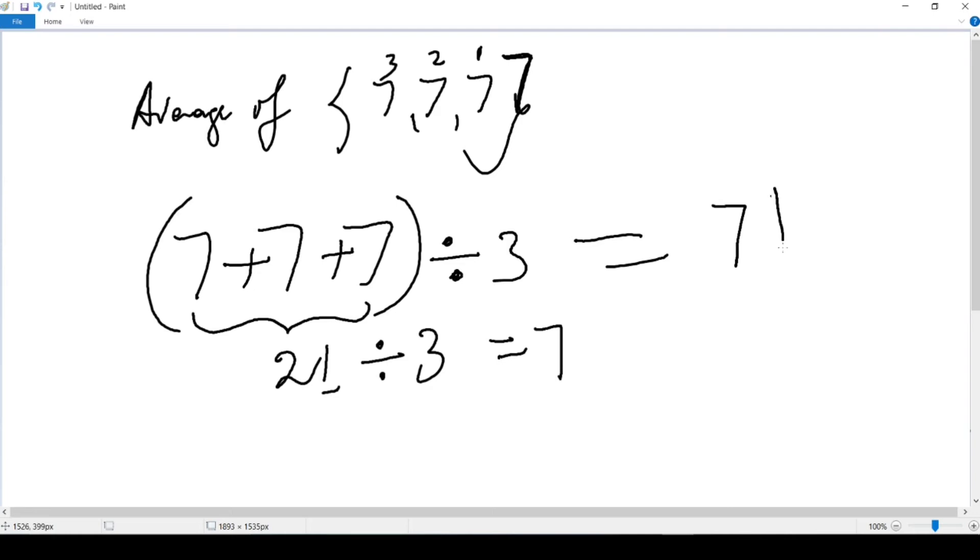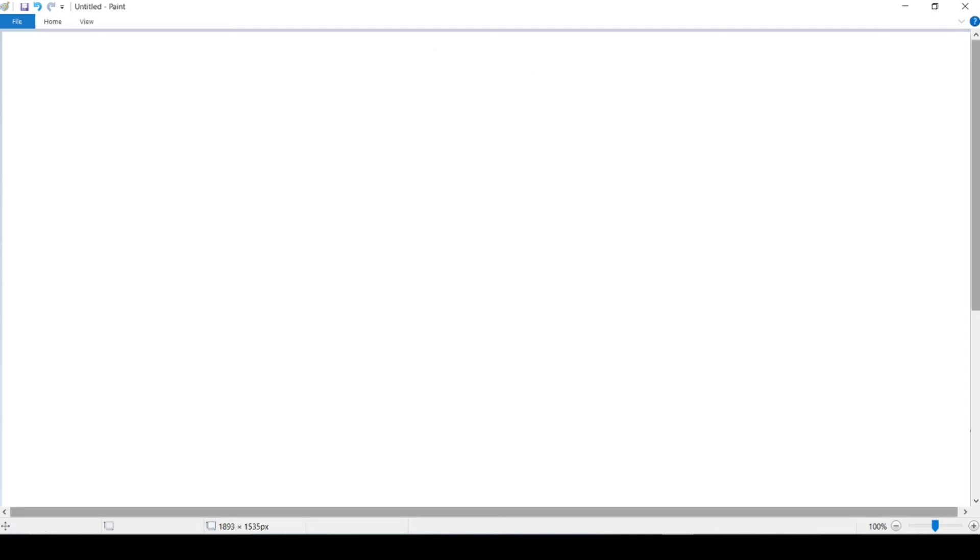Sometimes we know the average but there is a missing number in our set that we need to find. Say we have the average of our set {4, 6, a number that we don't know—we call X for now, 7} and the average, what I call AVG, equals 5. And the question is to find the value of X. What is X?